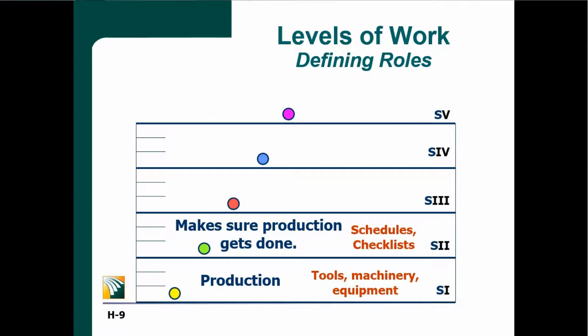If you have a stratum three role, at the top of the role description, Jaques would have you write: this is a stratum three position. This role in the organization is to create systems, monitor our systems, and constantly improve our systems.